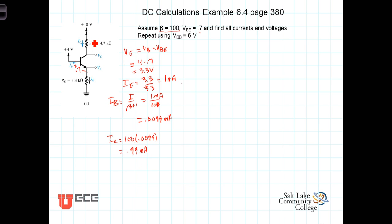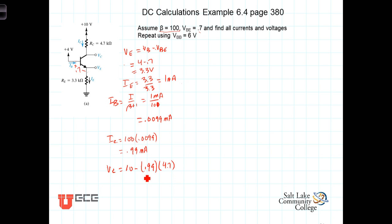Now that we know I_C, we can calculate V_C, which equals 10 volts minus the voltage drop across the resistor. So V_C equals 10 minus I_C times R_C. With I_C at 0.99 milliamps, V_C equals 5.3 volts. With V_B and V_C now known, we can verify whether our original assumption that we were in the active region was correct.